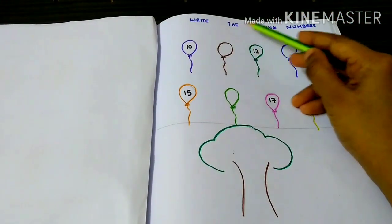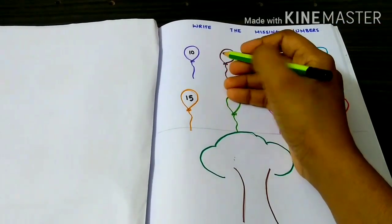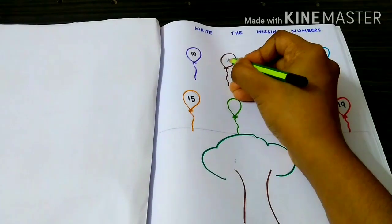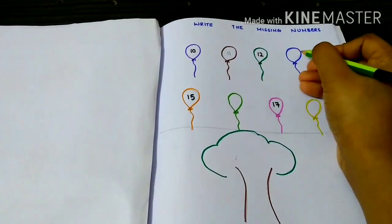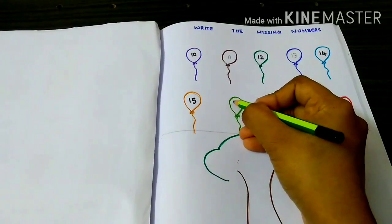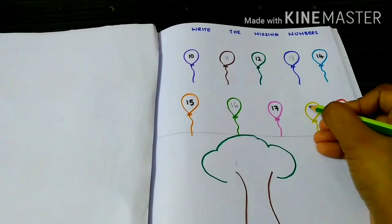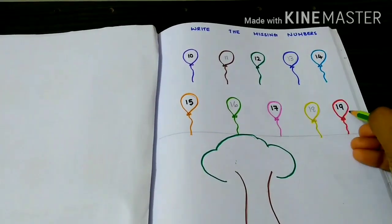Write the missing numbers. 10, 11, 12, 13, 14, 15, 16, 17, 18, 19.